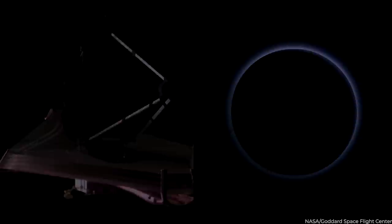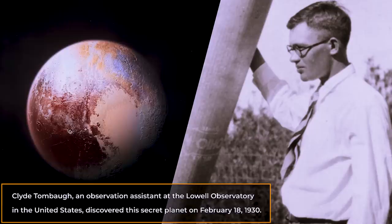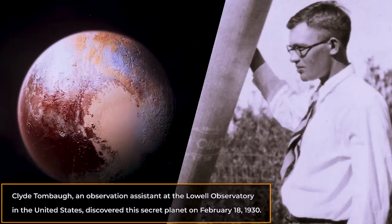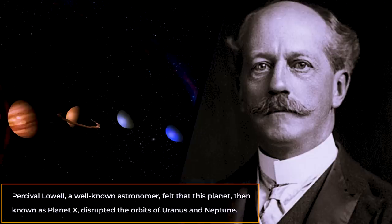Clyde Tombaugh, an observation assistant at the Lowell Observatory in the United States, discovered this secret planet on February 18, 1930. On the other hand, Percival Lowell, a well-known astronomer, felt that this planet, then known as Planet X, disrupted the orbits of Uranus and Neptune.